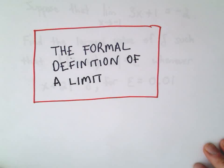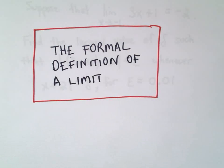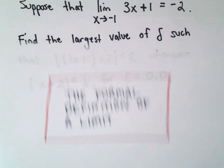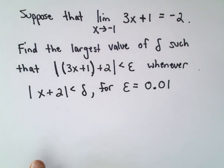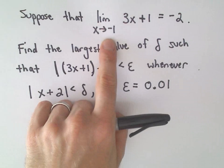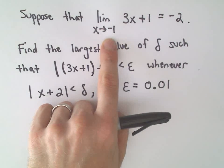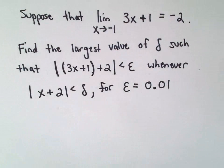Okay, in this video we're going to do another example related to the formal definition of a limit, and it'll be very similar to what we did in the last example. So here we're going to be given that the limit as x approaches negative 1 of the function 3x plus 1, that equals negative 2.